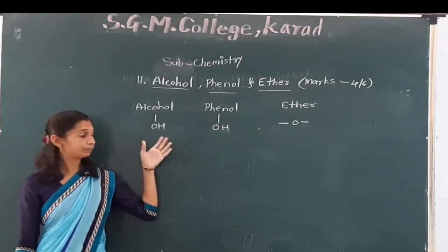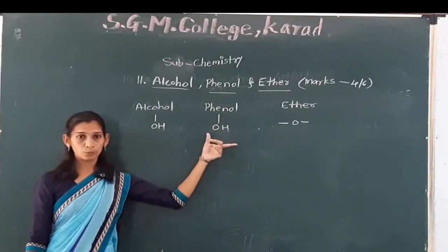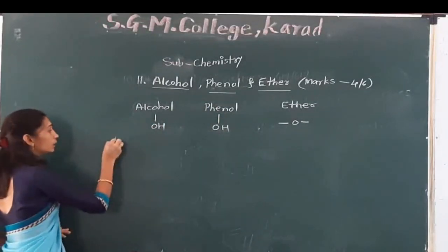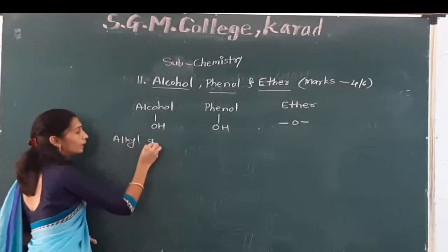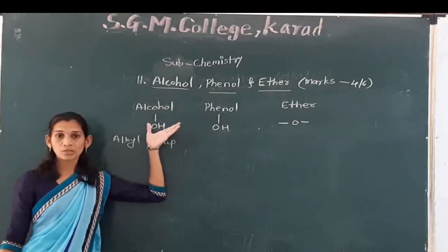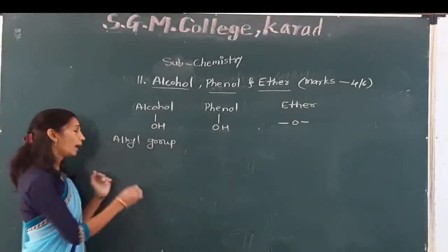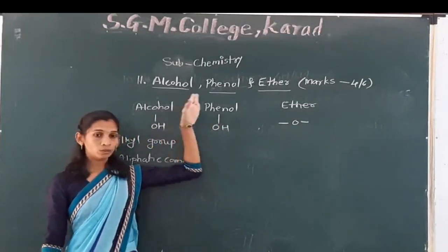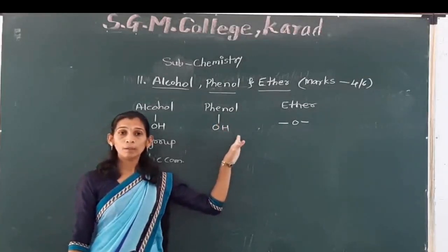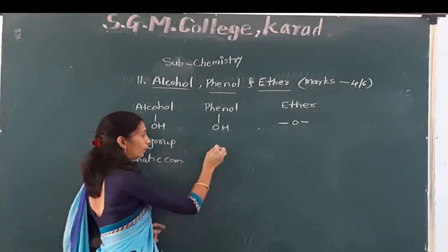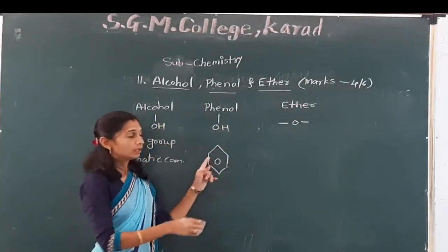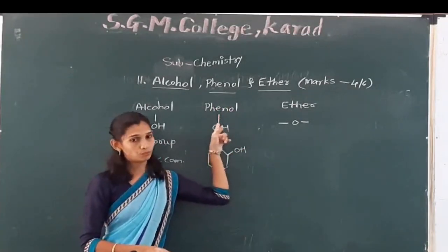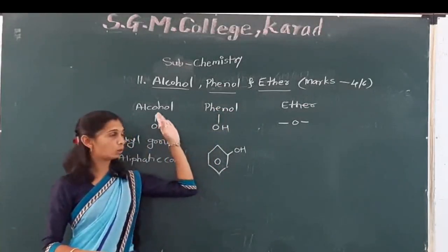In case of alcohol, the OH group is attached to an alkyl group or alkyl compound. What is the difference between alcohol and phenol? In case of phenol, the same functional group OH is attached but here to an aromatic compound. For example, benzene — in case of benzene, the functional group OH is attached to the benzene ring. That type of compound is known as phenol. That is the basic difference between alcohol and phenol.